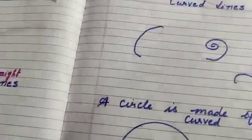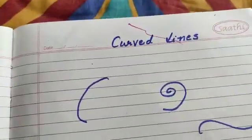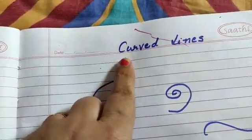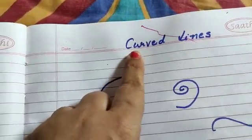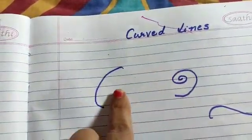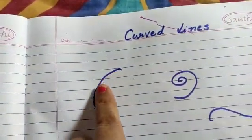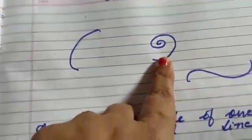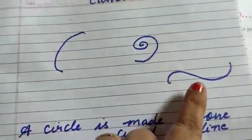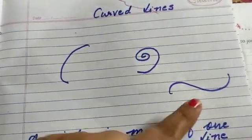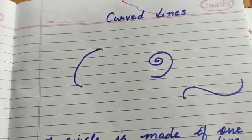Now next we will study about curved lines. Curved lines means lines which are not straight. You can see this is a curved line. This is a curved line. Again, this is a curved line.